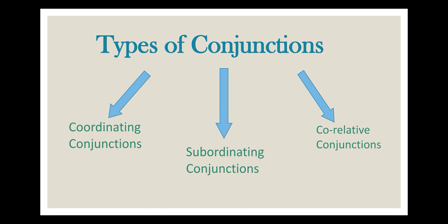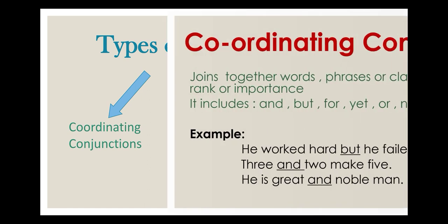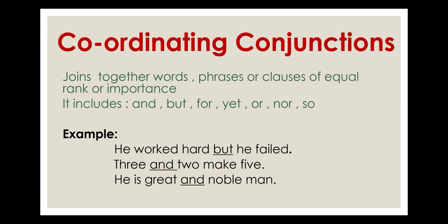Now have a look at the types of conjunctions. There are three types: coordinating conjunctions, subordinating conjunctions, and correlative conjunctions. Let's study these conjunctions one by one. First is coordinating conjunctions. As the name suggests, coordinating conjunctions join together words, phrases, or clauses of equal rank or importance.